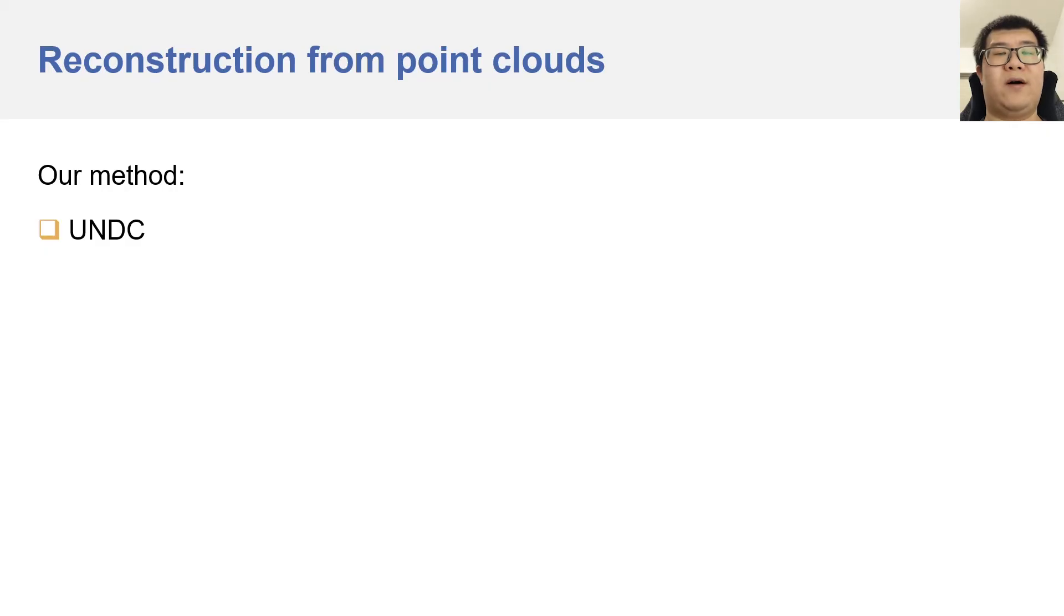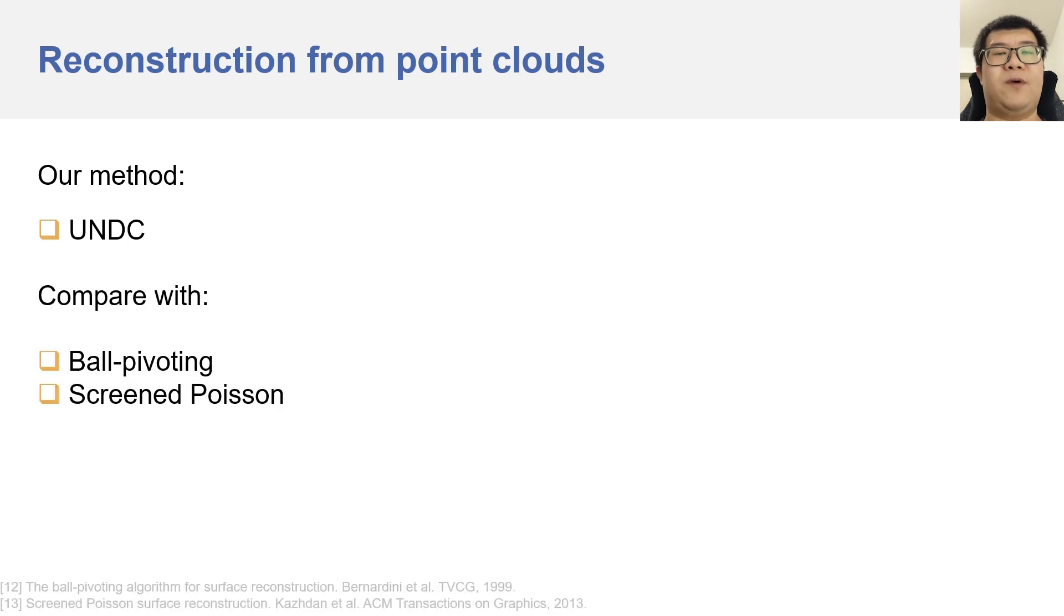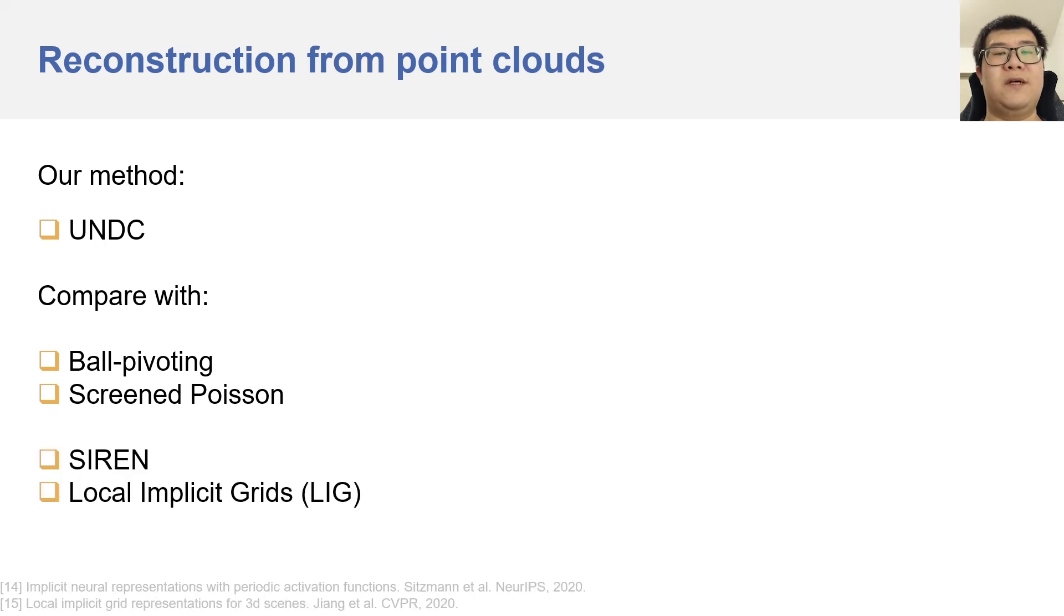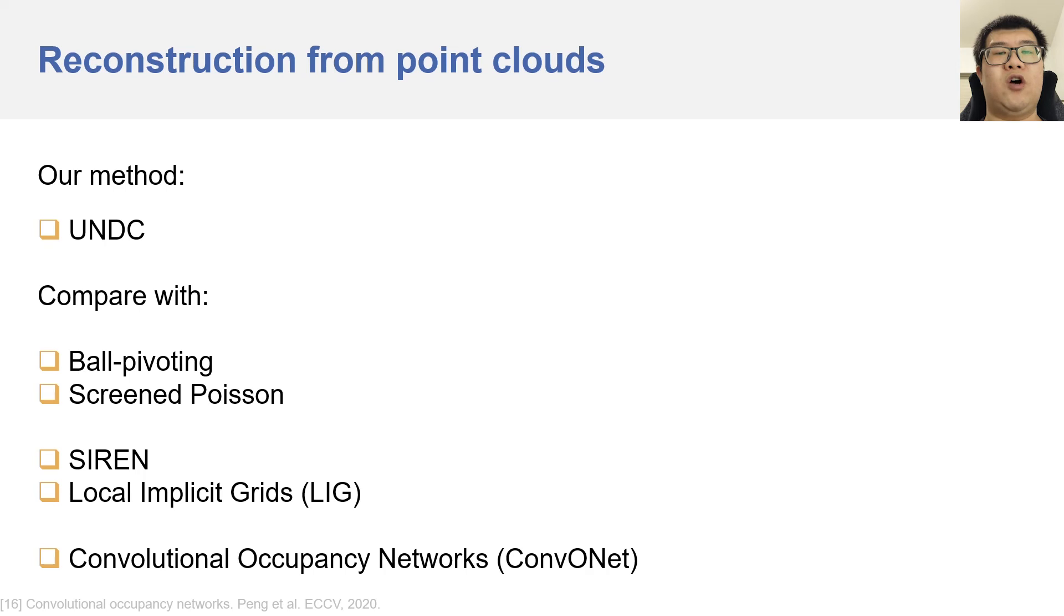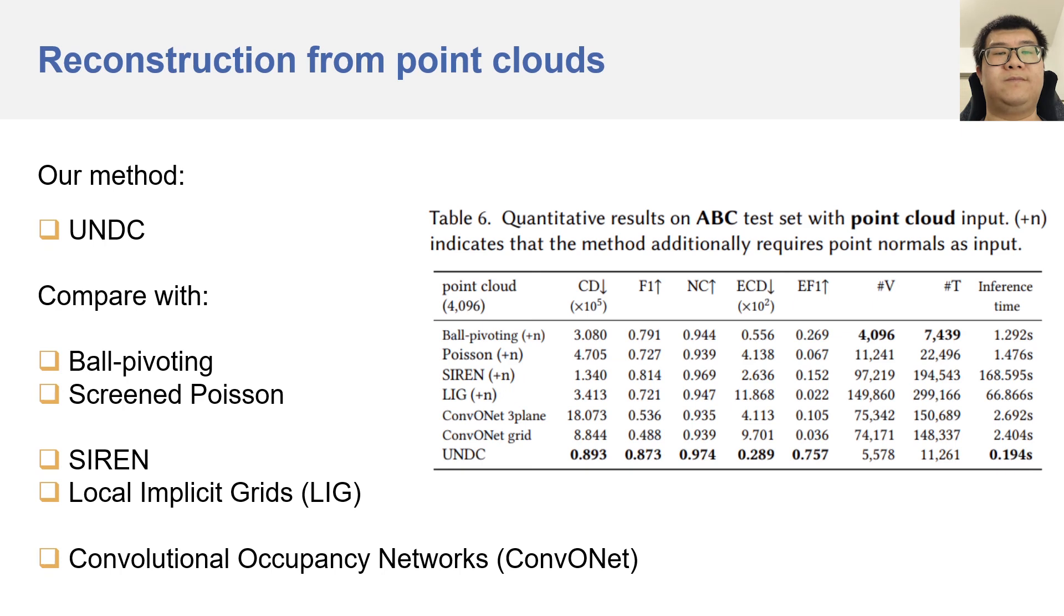In the next experiment, we reconstruct meshes from point clouds. We compare our method, UNDC, with ball pivoting and screened Poisson, representing classic methods, and SIREN, local implicit grids, and convolutional occupancy networks, representing deep learning methods. Here are the quantitative results. Note that these methods require point normals as input, except for convolutional occupancy networks and our method.